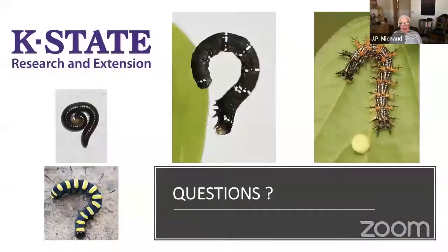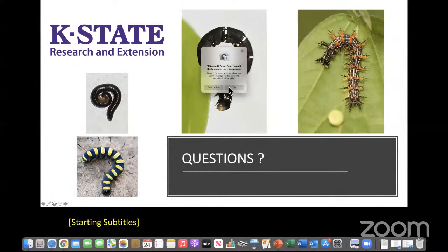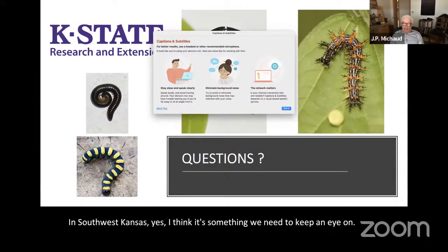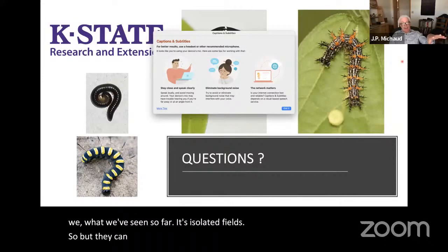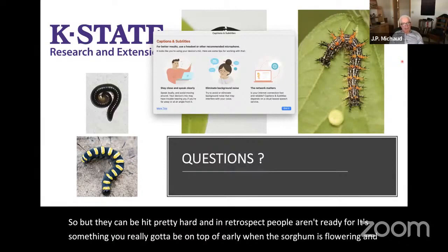Question: do we need to be more concerned with sorghum midge in southwest Kansas? Yes, it's something we need to keep an eye on. What we've seen so far has been isolated fields, but they can be hit pretty hard, and people often aren't ready for it. You really have to be on top of it early — when sorghum is flowering — and find it and treat it early, because once those larvae are inside the capsules there's nothing you can do. It's going to be a difficult one if it becomes more prevalent.